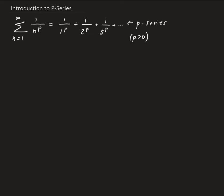Here are some examples. If we let p be equal to 2, then we have that series. Another classic example: if p is 1, then we get 1 over n. The summation of 1 over n is what's called a harmonic series.